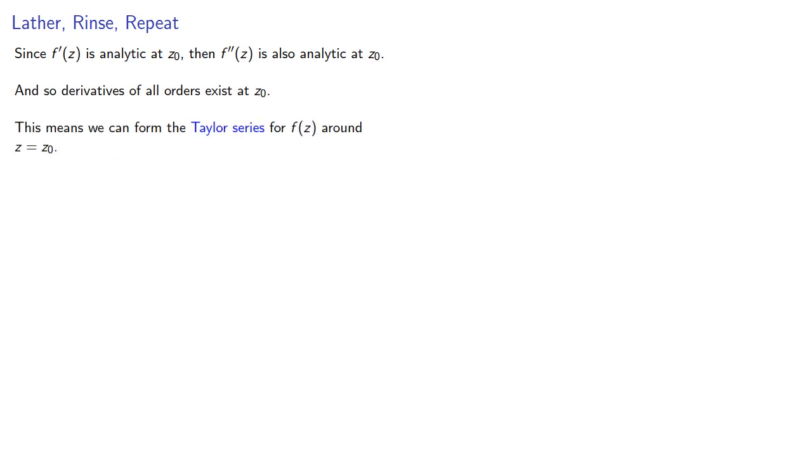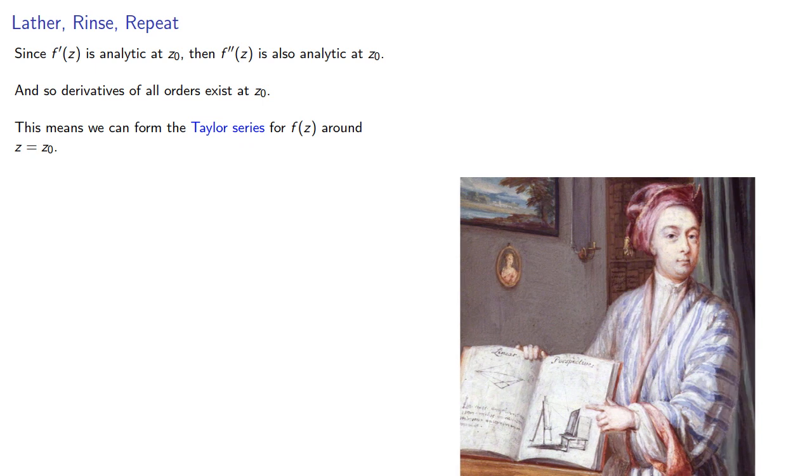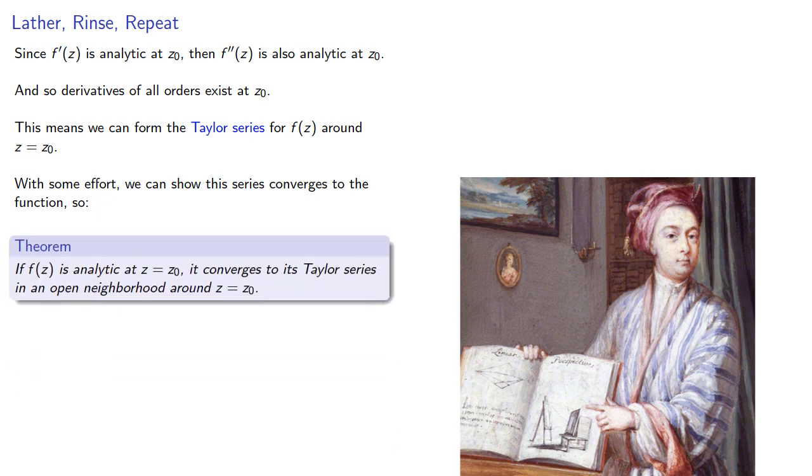And now we can lather, rinse, repeat. Since our derivative is analytic at z naught, then the second derivative is also analytic at z naught. And so derivatives of all orders exist at z naught. And this means that we can form the Taylor series for our function around z equals z naught. Now, with some effort, we can show this series actually converges to the function. And this leads to an important result. If a function is analytic at a point, it converges to its Taylor series in an open neighborhood around that point.